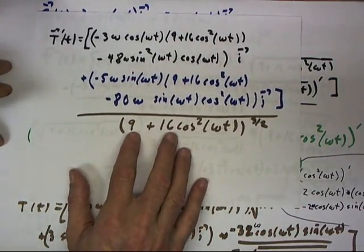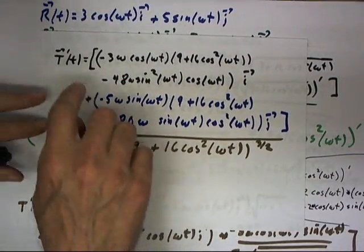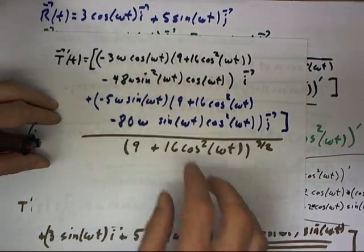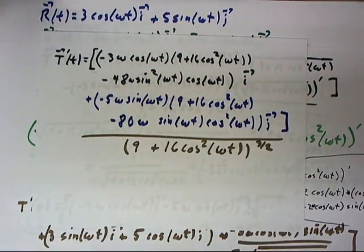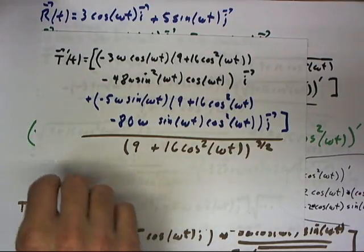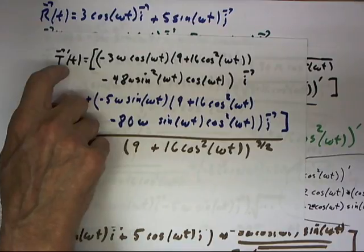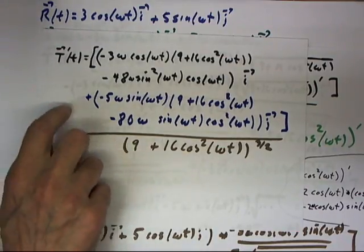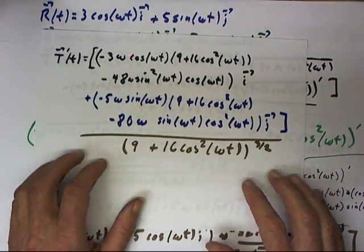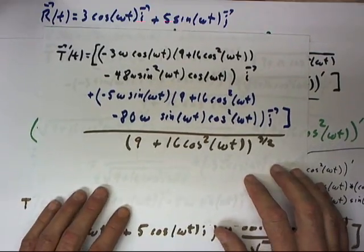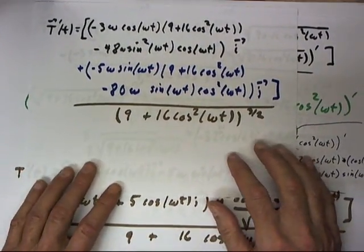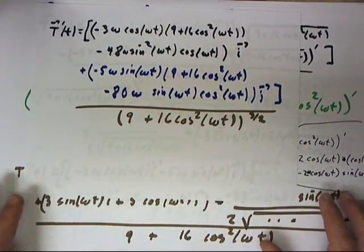And this is now our expression for the derivative of the unit tangent vector. Now, I've said earlier that this is a relatively straightforward process of differentiation. Sometimes the unit tangent vector can be much more complex than this. And let me emphasize again, it's important to know the rules of differentiation and to simply apply them to this situation.